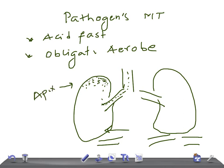That's why whenever tuberculosis is suspected in any patient, we take a chest radiograph and we look at the apexes first.